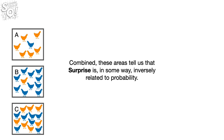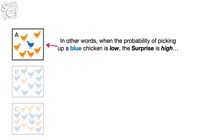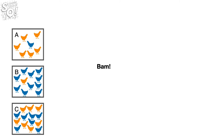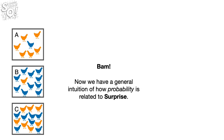Combined, these areas tell us that surprise is, in some way, inversely related to probability. In other words, when the probability of picking up a blue chicken is low, the surprise is high. And when the probability of picking up a blue chicken is high, the surprise is low. Now we have a general intuition of how probability is related to surprise.